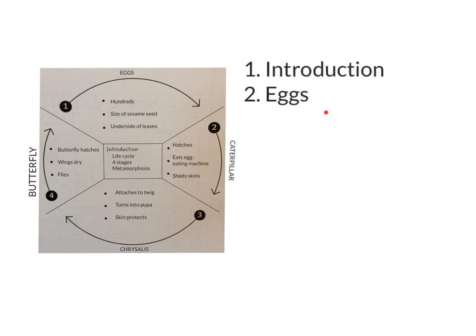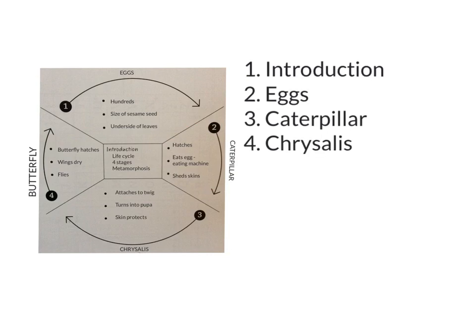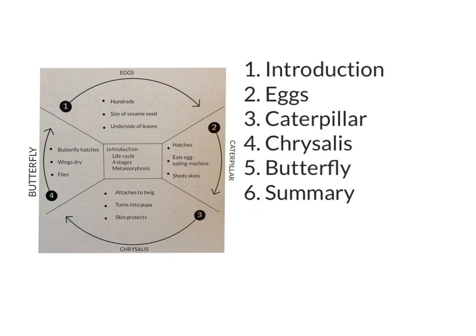My next paragraph is going to be about the eggs — the first part of the life cycle. My next paragraph is going to be about the caterpillar stage. My fourth paragraph is going to be about the chrysalis stage. My fifth paragraph is going to be about the butterfly stage. And my sixth paragraph is going to be a summary, which will sum up the main things I talked about in my story.